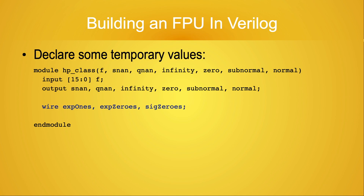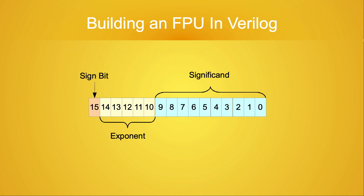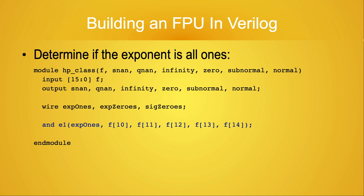I can declare variables to hold each of these pieces of state with the following line. Bits 10 through 14 of F are the exponent bits. We can access these bits while doing the computation as if F were an array of bits, and each individual bit can be accessed using a subscript. Verilog has a built-in method which can logically AND together a set of bits. Using this method our code would look like this. This statement sets exp1s to be one if all of the exponent bits of F are set to one.